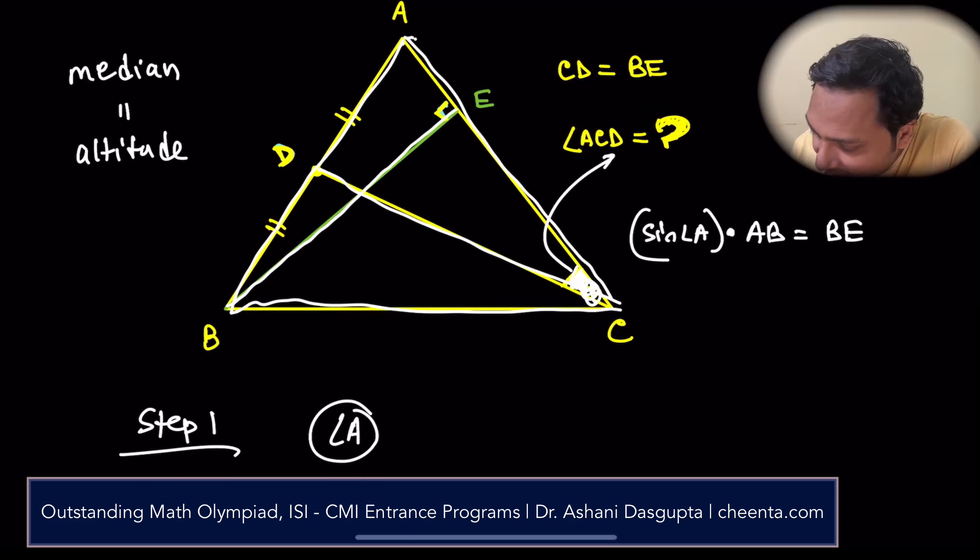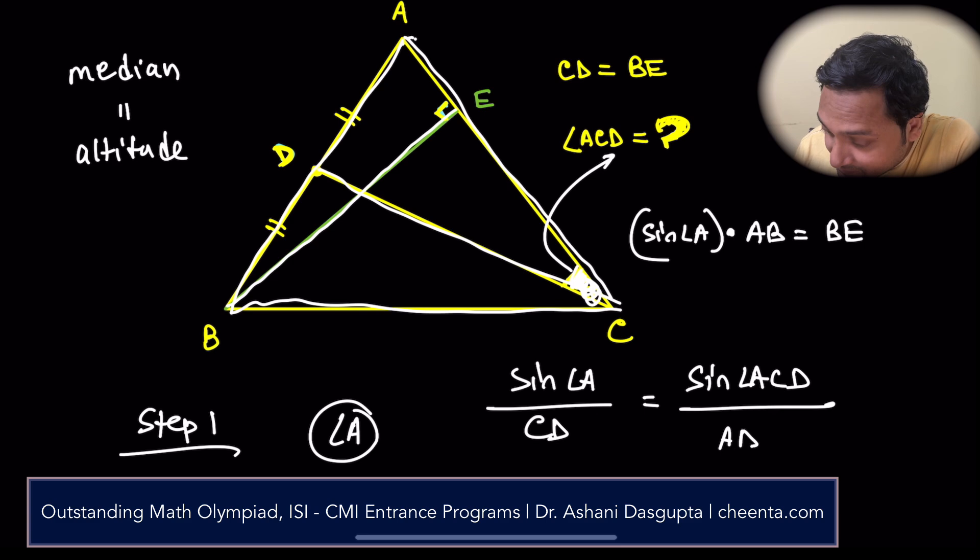We can see that sine of angle A divided by CD is equal to sine of angle ACD divided by AD. This is using the sine rule from trigonometry. Sine of an angle divided by the opposite side equals the sine of another angle divided by its opposite side.